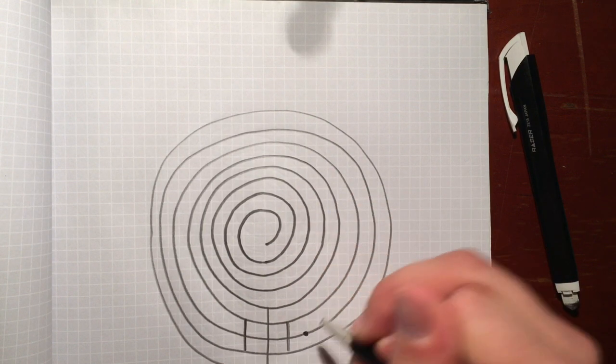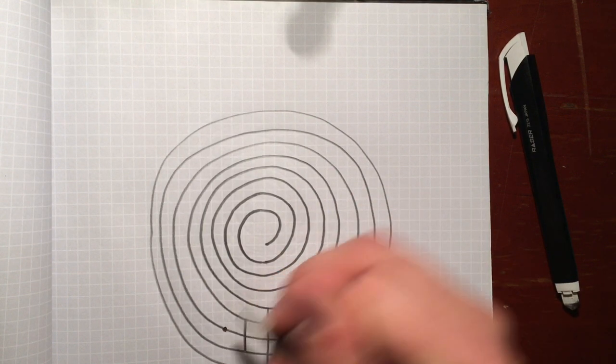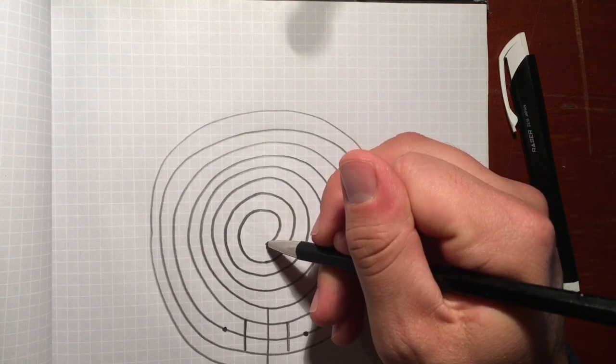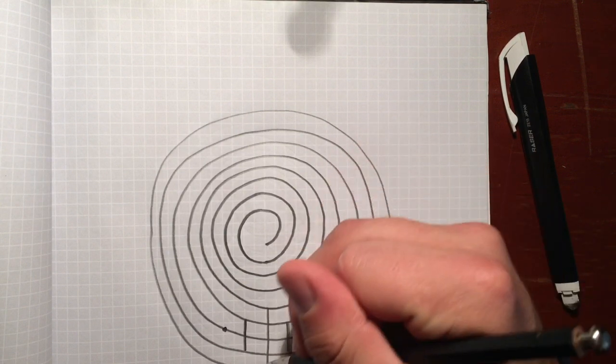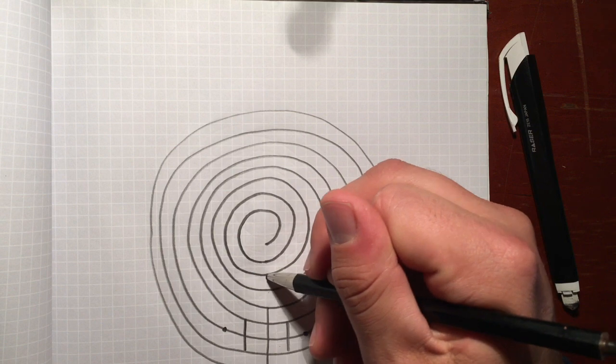And these are going to be your line ends. And then you're going to come in here and do the same thing. Is this one, two, three, four, five, six, seven, eight, nine.